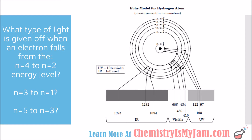In the case of n=3 going down to n=1, that is one of the electrons dropping to the n=1 energy level, starting on n=3, giving a wavelength of 103 nanometers — and the type of light would be UV. In the case of n=5 going down to n=3, that is one of three electrons dropping to the third energy level, and the one starting on the fifth gives a wavelength of 1,282 nanometers, which would be infrared light.